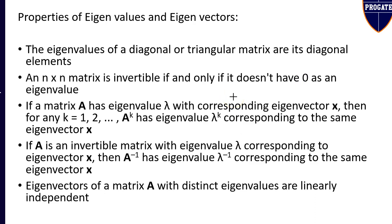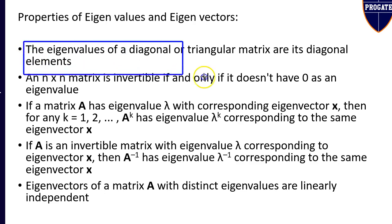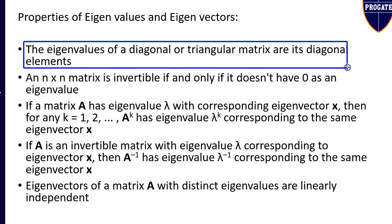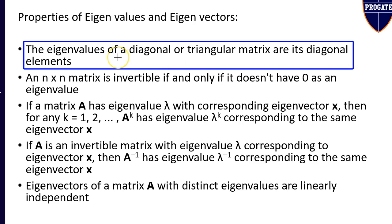The important properties of eigenvalues and eigenvectors are: Property 1 — the eigenvalues of a diagonal or a triangular matrix are its diagonal elements. Out of all five properties, the property useful in solving the current question is property 1: the eigenvalues of a diagonal or triangular matrix are its diagonal elements.